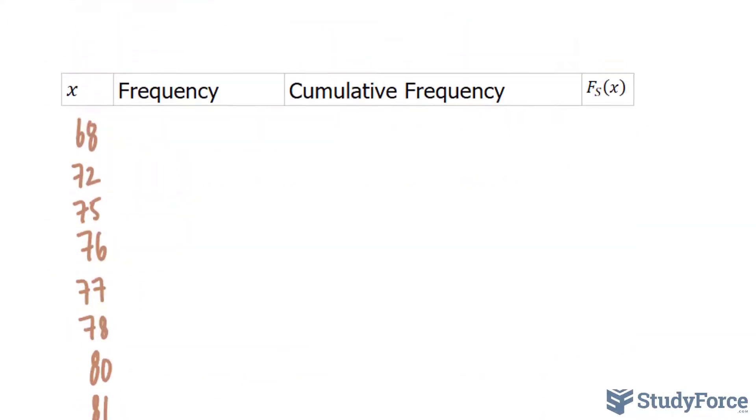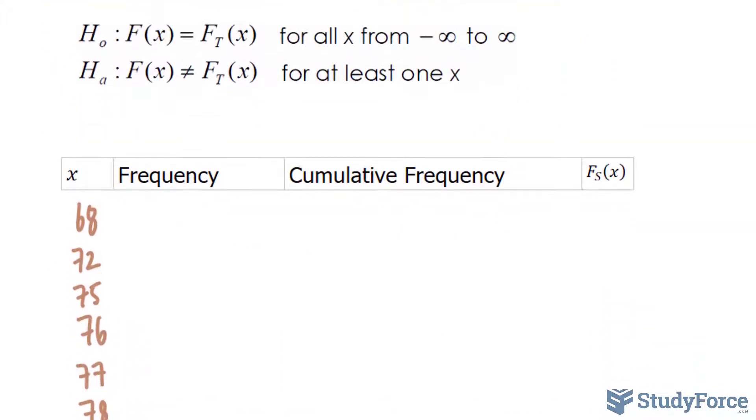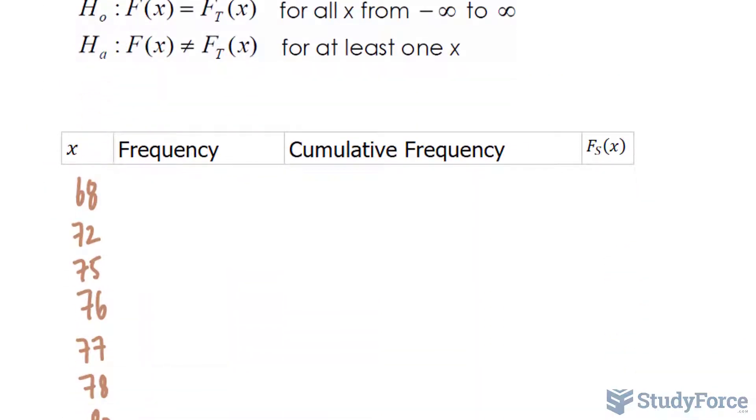On your screen are all the values, and we will now write down their frequencies. So for 68, there are two values of that, so I'll write down a frequency of 2. Going through the rest, you should end up with a full column that looks like this.